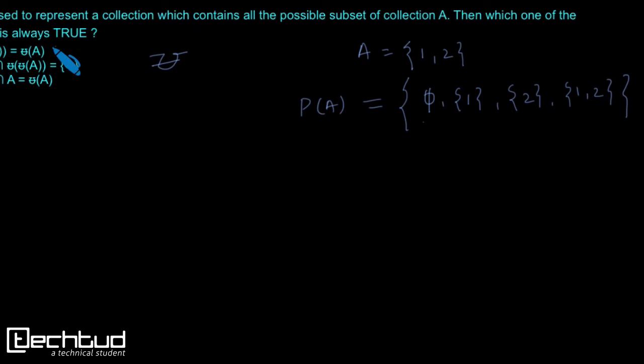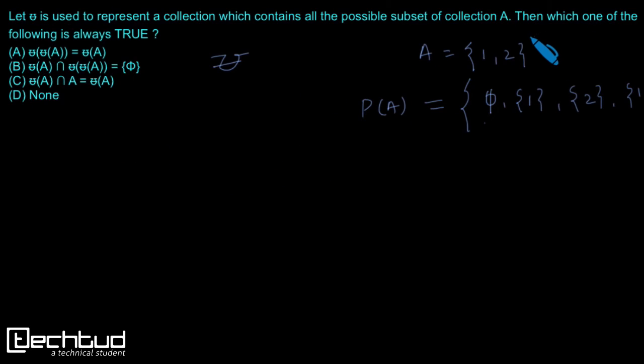This question basically tests the knowledge of this power set as well as whether you actually understand the definition. Here, power set has been replaced by this definition. Now let's come to the question. It is asking which one of the following is always true, always true not for a given instance. The first one is power set of power set of A equal to power set of A. Let's understand - this one is power set of A. Now let's find out what is power set of power set of A.